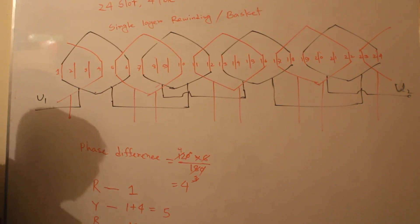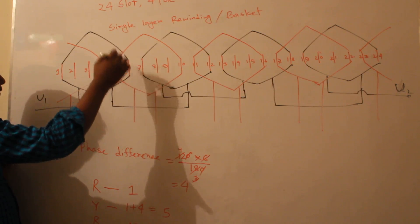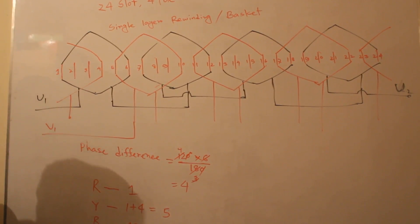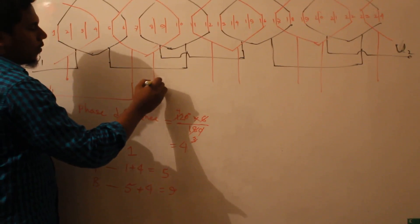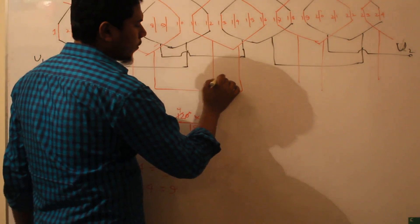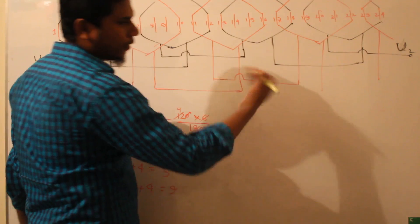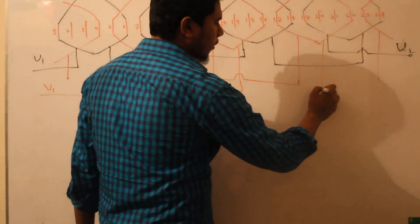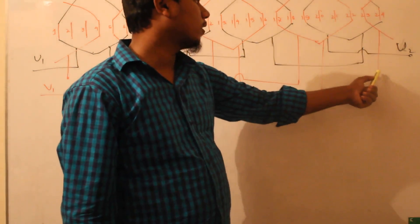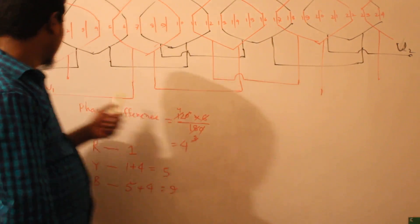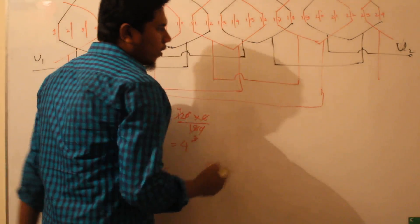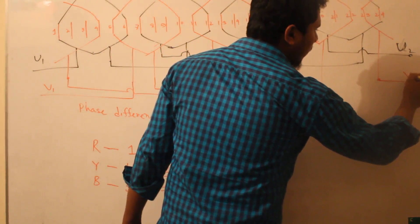Here is the last terminal. We get here this terminal — slot 5 is the start terminal, so this is the start terminal view wire. This coil and this coil finish terminal connect to the next coil start. This coil finish connects to the next coil, and the 4th coil finish — this is the 4th coil start.